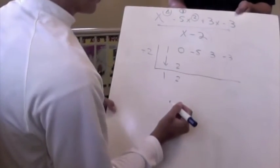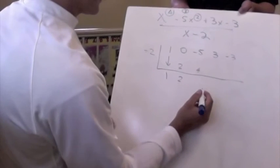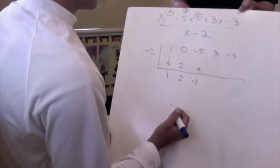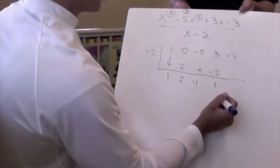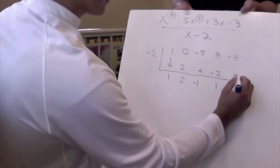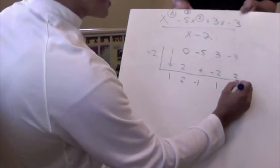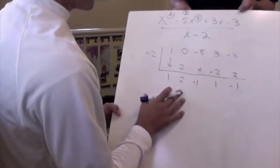2 times 2 is 4. Negative 5 plus 4 is negative 1. Negative 2 times negative 1 is negative 2. Then we get a 1. 2 times 1 is 2. Negative 3 plus 2 is negative 1. So those are all of our setups.